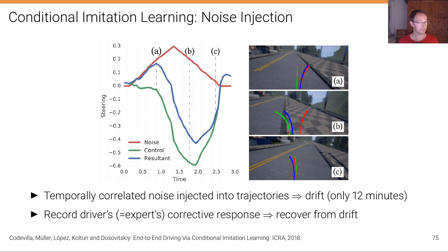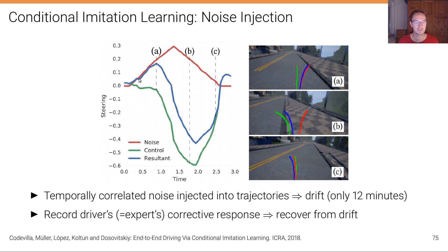They also introduced noise for data augmentation. They injected noise into the steering wheel and had the expert human demonstrator drive back — this was tiring and could only be done for a few minutes — but it helped resolve the distributional mismatch problem that behavior cloning suffers from. You can see how the noise is injected and how the human steers in the opposite direction to counter it and bring the vehicle back on the road, with the blue signal showing the resulting overlaid steering.